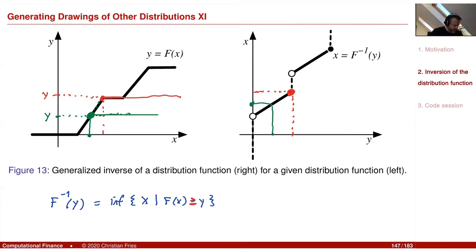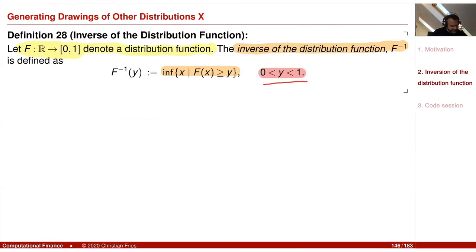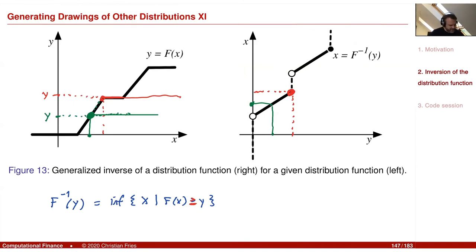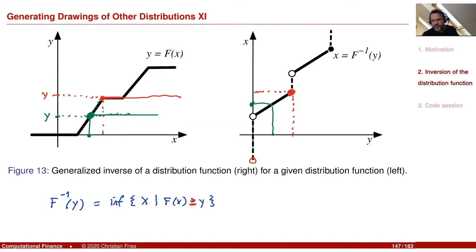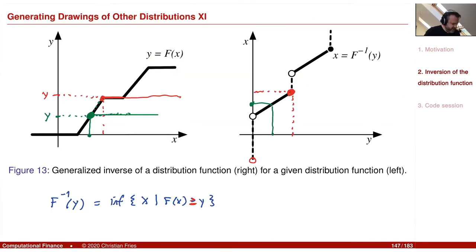Note that this definition is on the open set (0,1), so y is strictly between zero and one. This means we will not map to minus infinity. If y=0 were included, then since F(x) ≥ 0 always, the map would send 0 to minus infinity. This domain restriction is important and we will see it again in the implementation.